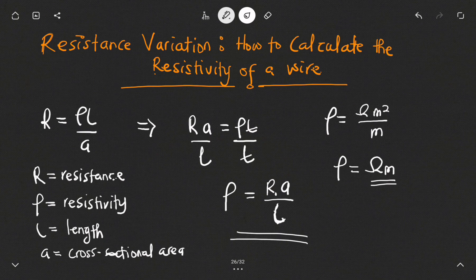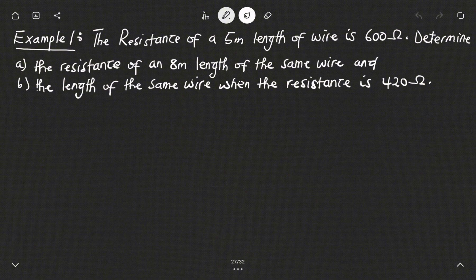Now that we've looked at the formula for calculating the resistivity of a particular wire, let's look at some practical examples. Example number one: the resistance of a five meter length of wire is 600 ohms. We are to determine A, the resistance of an eight meter length of the same wire, and B, the length of the same wire when the resistance is 420 ohms.